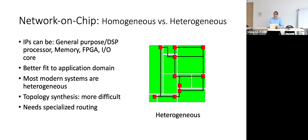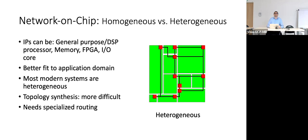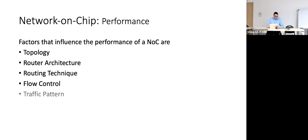Being specific is more complicated to design, but the final application will be faster. There are factors that affect performance: topology, router architecture, routing technique — which path to follow to reach from one node to another — and flow control, which determines if a path can be followed depending on its state. For example, if a lot of data are passing through a path, things will slow down because there is traffic.